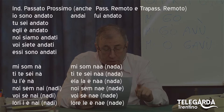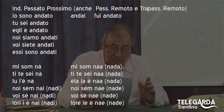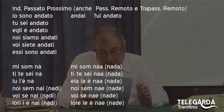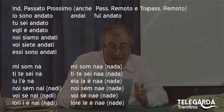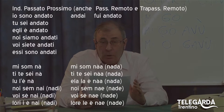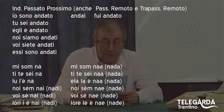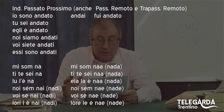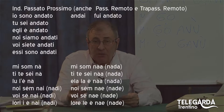Lori i è nai o lori i è nadi. Quindi il femminile sarebbe ela la na o ela la nada, lori le è nae o lori le è nade. E questo è il passato prossimo, cioè io sono andato: mi som na.